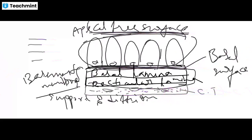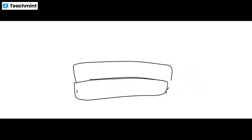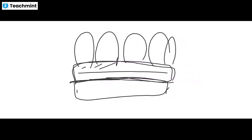The basement membrane supports the epithelial cells and also helps in the diffusion of substances from the connective tissue to the epithelial tissue. The connective tissue lies beneath the basement membrane.